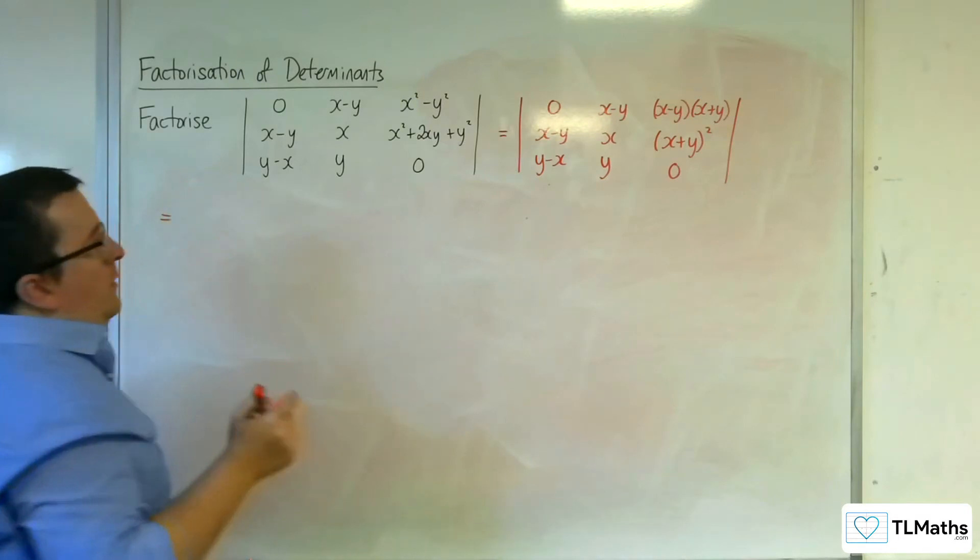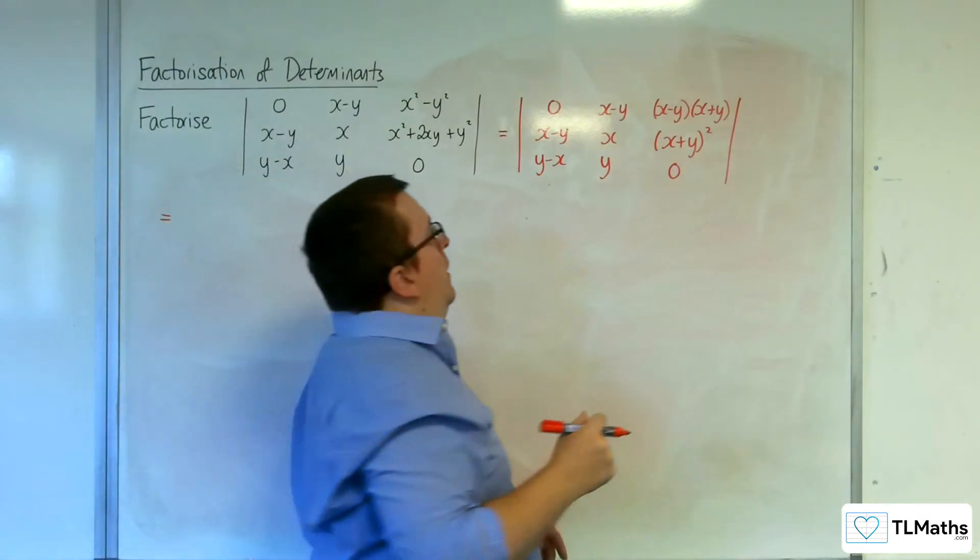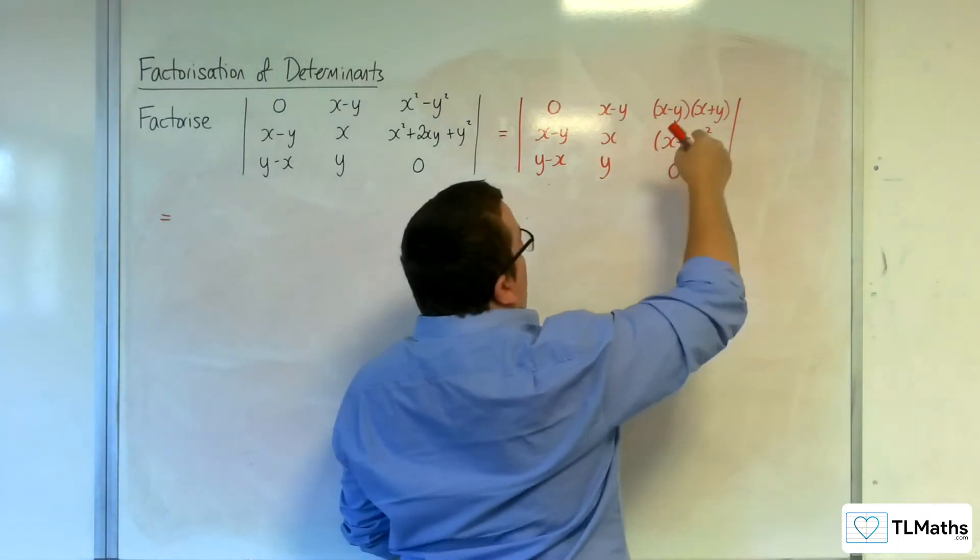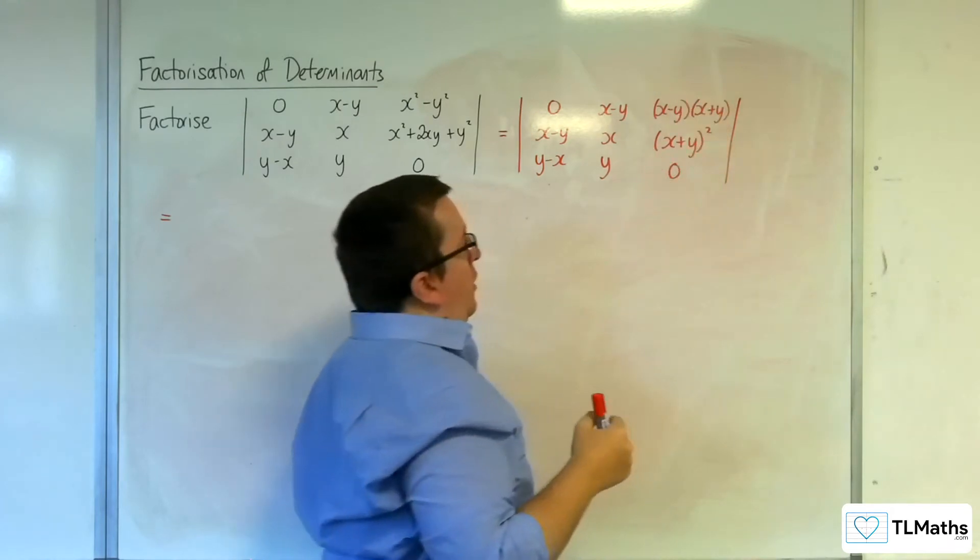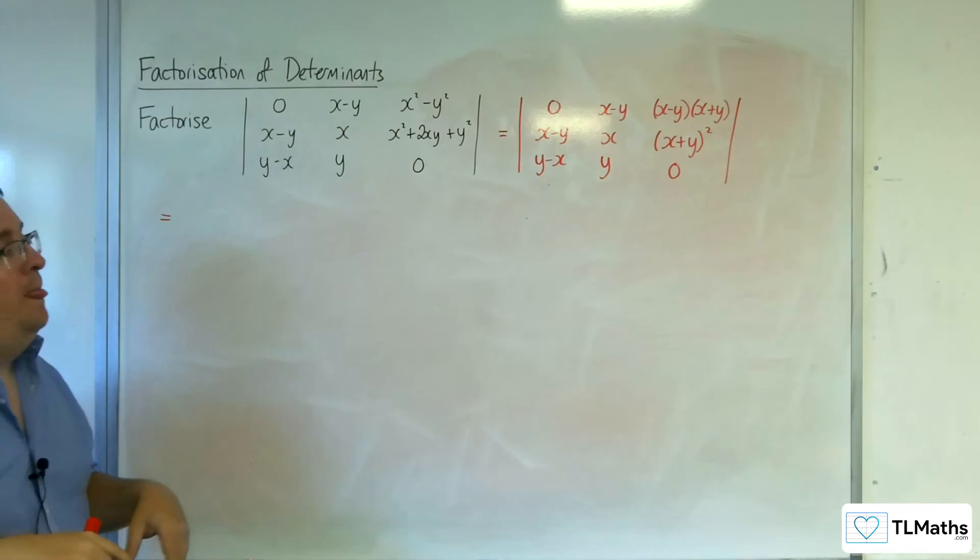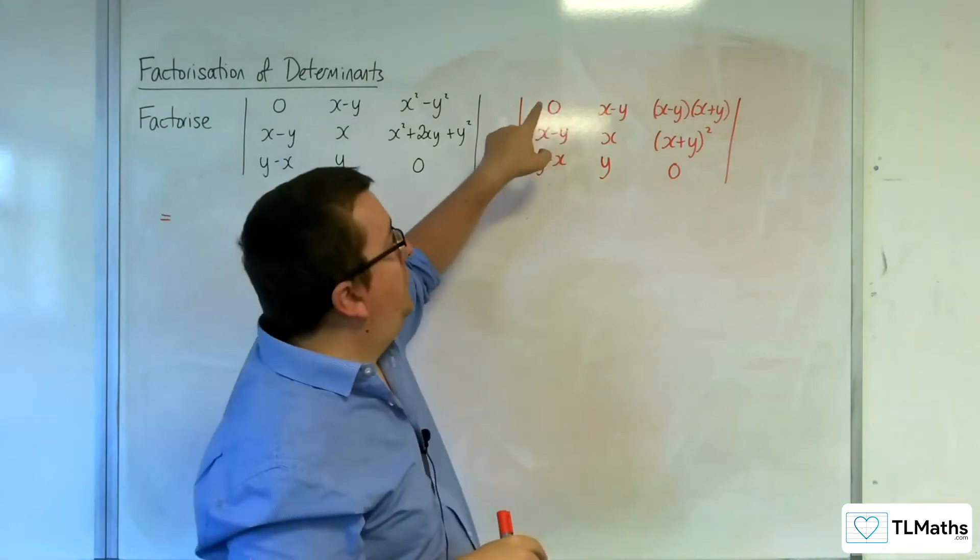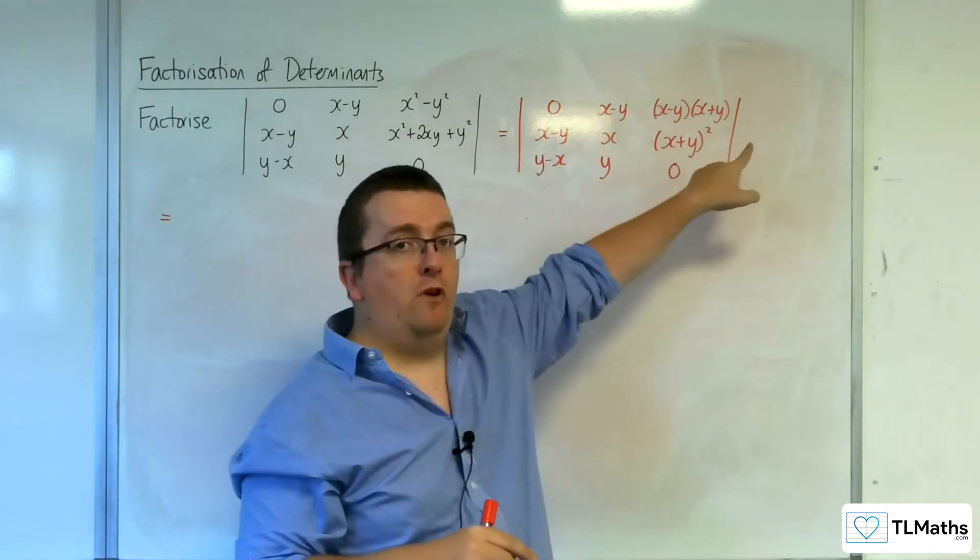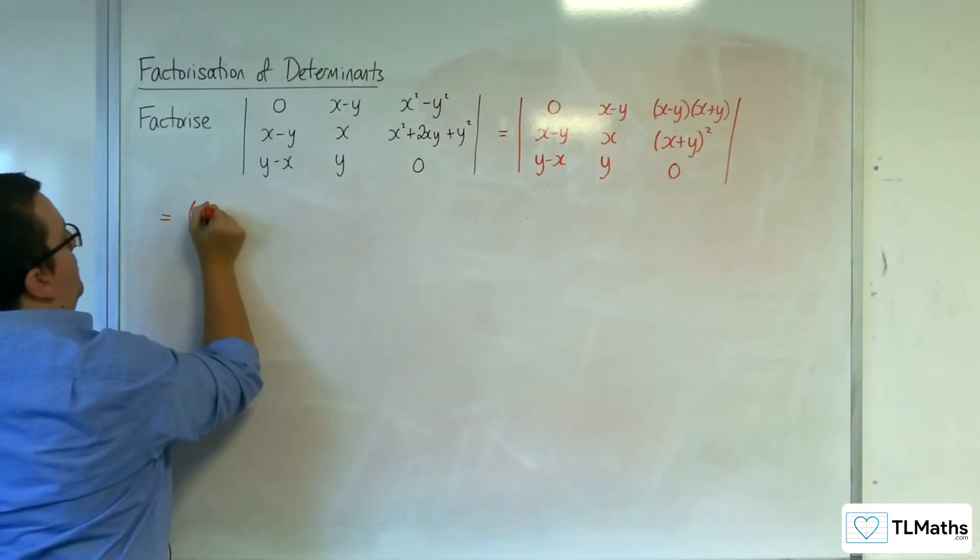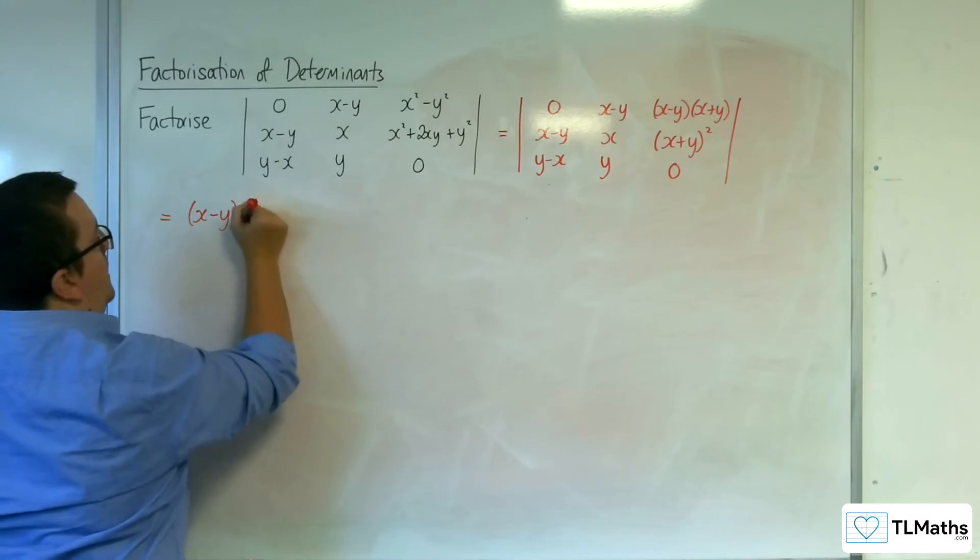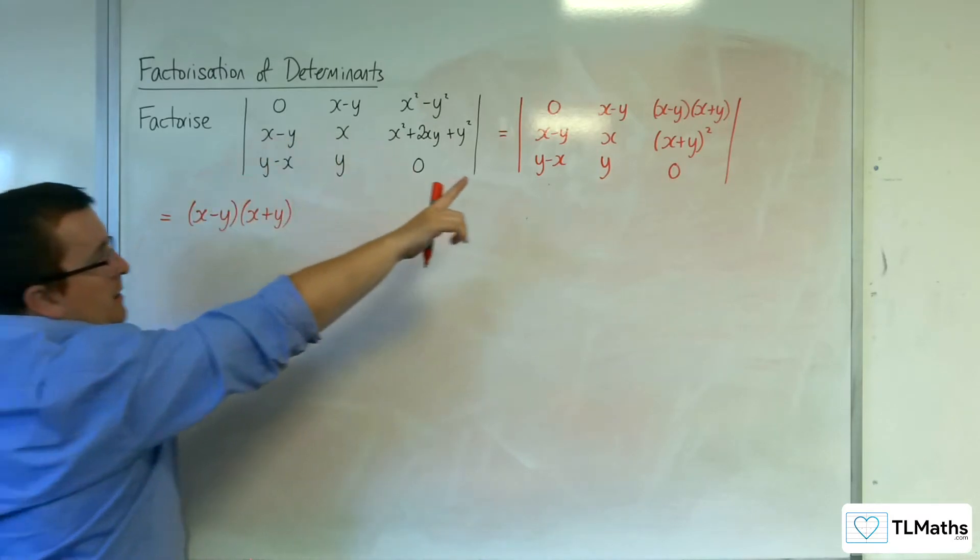From that, you should see that we can factor out the (x+y) from the third column. Then, also, we can factor out the (x-y) from the top row. So let's do both of those at the same time. So we've got the (x-y) from the top row, and the (x+y) from the right-hand column.